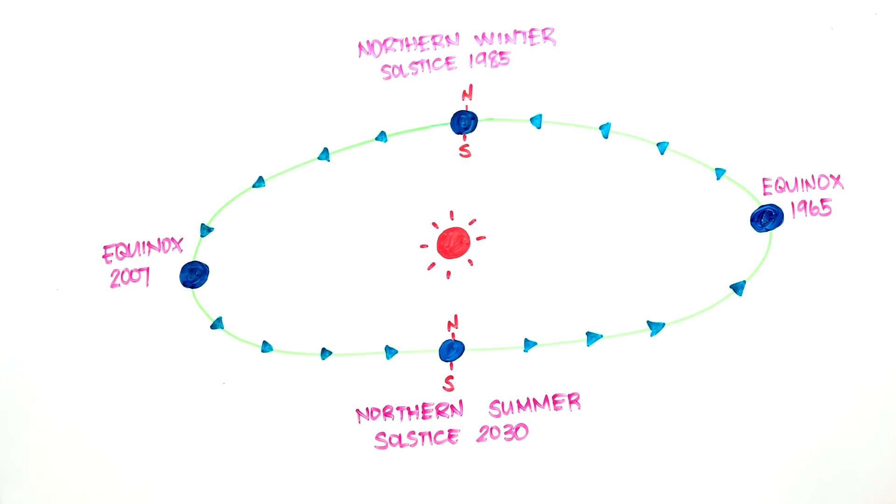It is the coldest planet in our solar system with a minimum temperature of negative 224 degrees Celsius. This is because Uranus gives off less heat than it absorbs from the Sun.